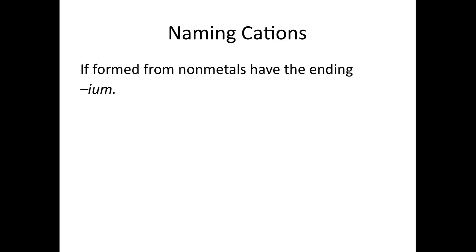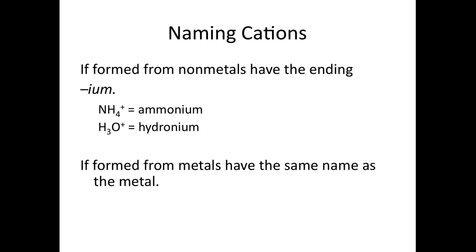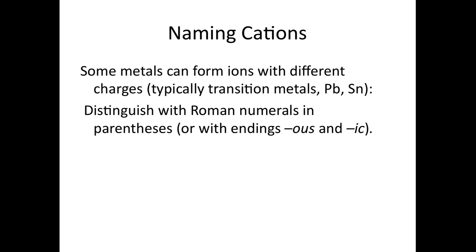Let's talk about naming cations. Normally if cations are formed from nonmetals they have the ending -ium, and the most common nonmetal cations are polyatomic cations like ammonium or hydronium. If cations are formed from metals they have the same name as the metal. Some metals can form ions with different charges, typically transition metals and also lead and tin. To distinguish what charge the metal ion has you use Roman numerals in parentheses after the name. You can also use the endings -ous or -ic to distinguish the oxidation state.